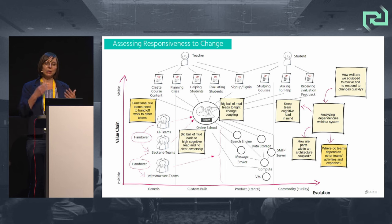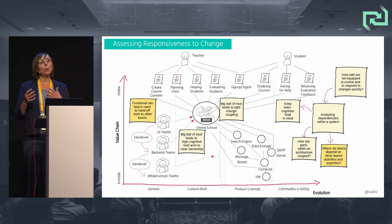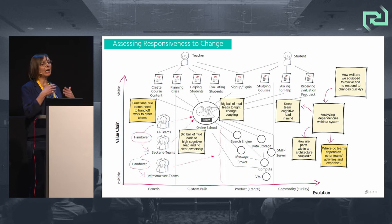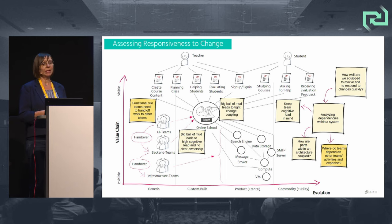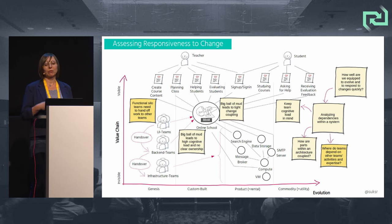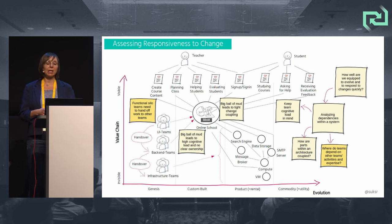We also need to analyze not just our architecture but also where teams depend on other teams' activities and expertise to get their work done. Do teams need to repeatedly hand over their work to other teams at a later stage of flow? The teams in our online school example are currently organized as functional silo teams, and implementing and releasing changes from front-end to back-end requires handing over work from UI, back-end, and infrastructure teams.